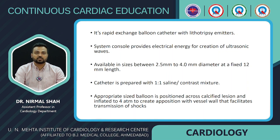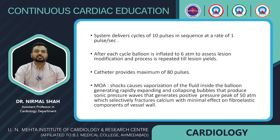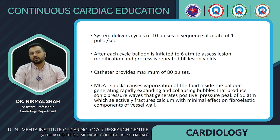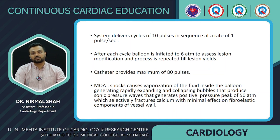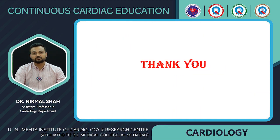IVL catheters are available in sizes between 2.5 mm to 4 mm diameter at a fixed 12 mm length. The catheter is prepared with a 1:1 saline-contrast mixture, positioned across the calcified lesion, and inflated to 4 atmospheres to create apposition with the vessel wall, facilitating transmission of shocks. The system delivers cycles of 10 pulses at one pulse per second; after each cycle the balloon is inflated to 6 atmospheres to assess lesion modification. The catheter provides a maximum of 1,080 pulses. The mechanism: shocks cause vaporization of fluid inside the balloon, generating rapidly expanding and collapsing bubbles that produce sonic pressure waves with positive pressure peaks of 50 atm, selectively fracturing calcium with minimal effect on the fibroelastic component of the vessel wall.